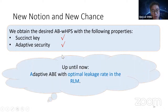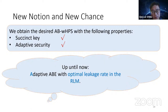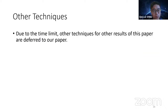Since all existing ABE schemes with succinct keys lack adaptive security, we introduce a new notion called partially adaptive ABE. We require adaptive security for the first part of the attribute vector X and selective security for the remaining part. With this notion, we can design ABWHPS and, putting everything together, obtain adaptive ABE with optimal leakage rate in the relative leakage model. Other techniques for the remaining results are deferred to our paper. Thank you.